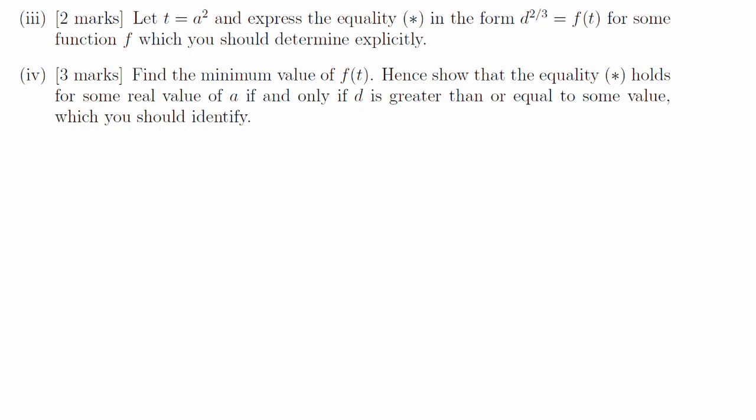Part 3. If we make the substitution and rearrange, then we find that that equality is this function f of t written in two different ways on screen there. Part 4. The minimum value of f of t corresponds to the minimum value of d to the 2 3rd. So if we can work that out, then we can find the value of d in the question. Minimising f means differentiating something of the form t to the a twice. If we do that, we find the minimum happens when t is 2 and the value of d turns out to be 3 root 3 at that point.